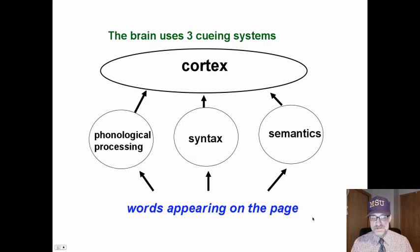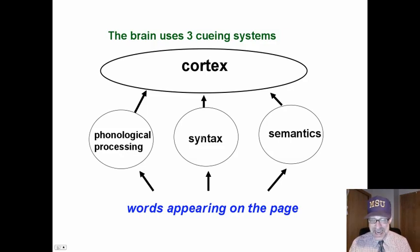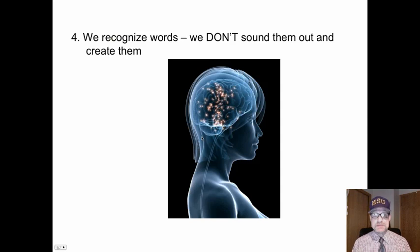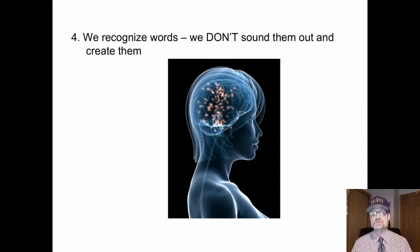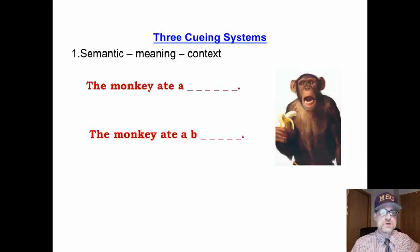The words appear on the page and we use not one, but three: phonological processing — letters and sounds — syntax, grammar, word order, and semantics. We recognize words as we read. We do not sound them out. We do not process each and every individual letter. If we did, it would take us forever to read.